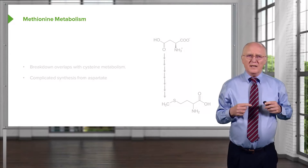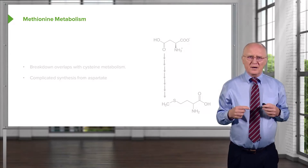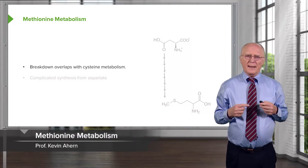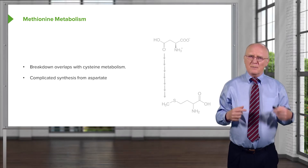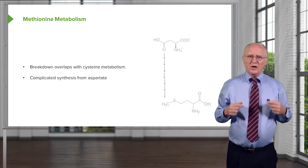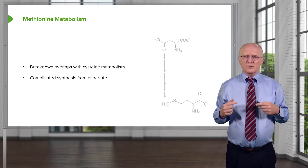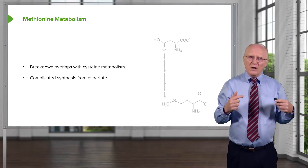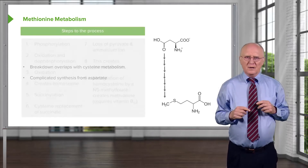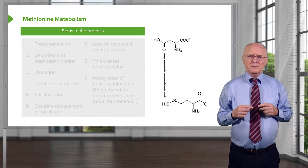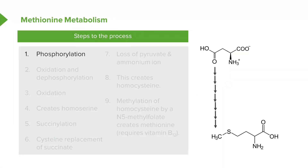Methionine metabolism is kind of complicated as we study it coming from aspartic acid. The breakdown of methionine actually overlaps with cysteine metabolism. The complicated synthesis that comes from aspartate I show here with a set of arrows. In the other set of lectures where I've talked about vitamin B12 metabolism, I actually showed those seven reactions, so I'm not going to show them again here. Suffice it to say that there are seven chemical steps: a phosphorylation, an oxidation that accompanies a dephosphorylation, and another oxidation. This process creates homoserine.